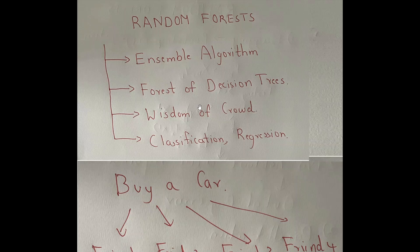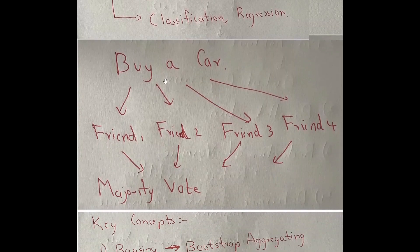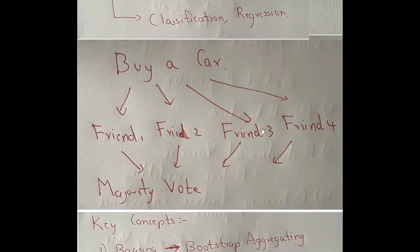Ensemble algorithms use this concept of wisdom of crowd. What is wisdom of crowd? Suppose you are going to buy a new car — you would ask your friends their opinion on a particular brand. You would ask many friends and relatives, and then you would consider their opinions and do a majority vote. If 3 or 4 people say Maruti is better than Tata, or Baleno is better than Altroz, you get influenced and take a decision. Similarly, looking at online reviews — if the majority say Baleno is better, you go with Baleno. This is the wisdom of crowd concept.